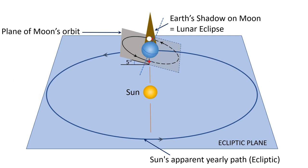Similarly, during the Solar Eclipse, the Moon is between the Sun and the Earth, and the Moon blocks the light of the Sun from reaching the Earth. In other words, the Moon casts a shadow on the Earth.